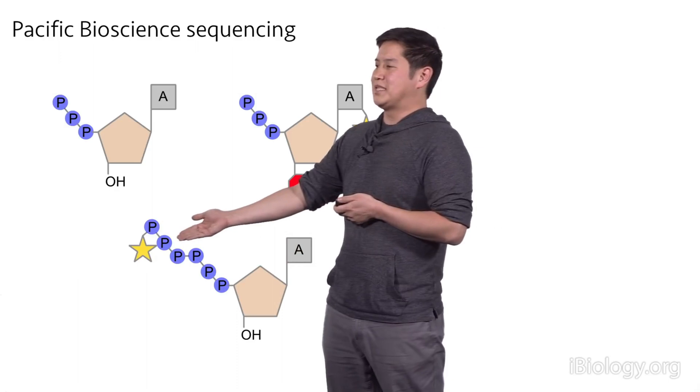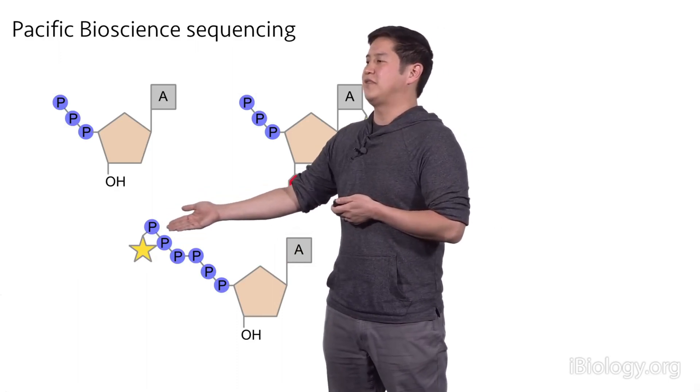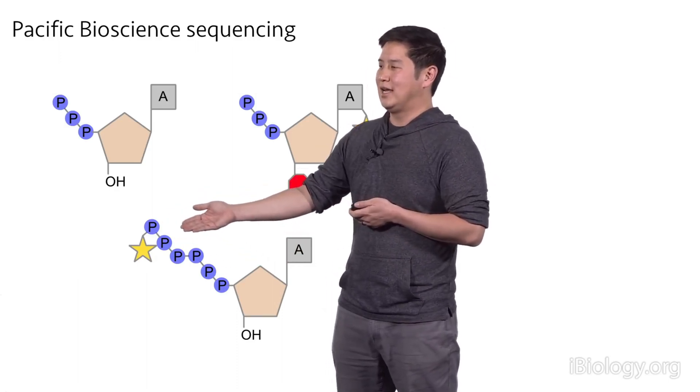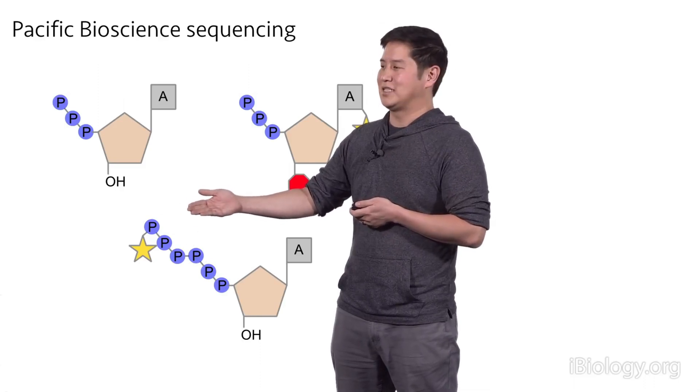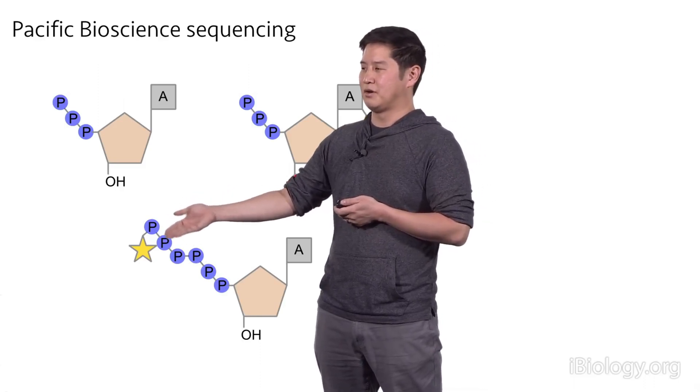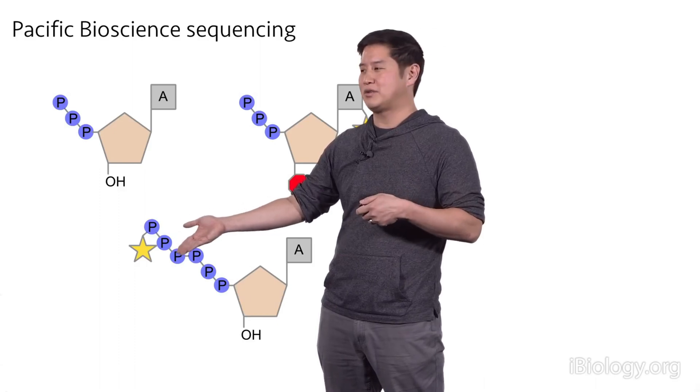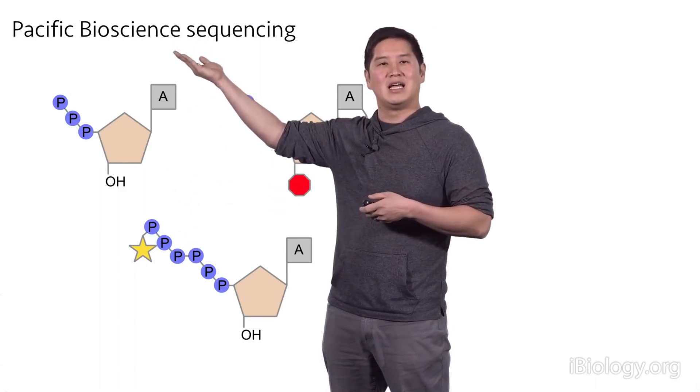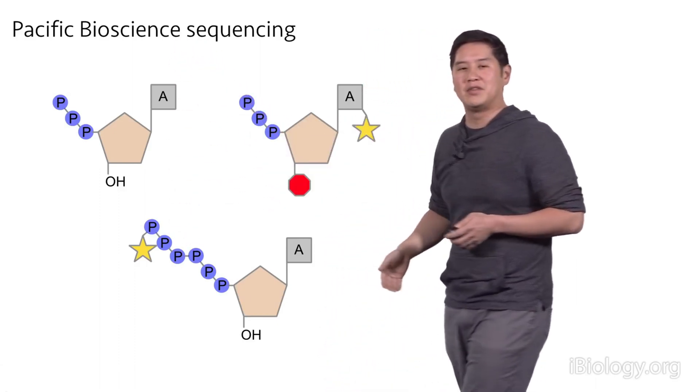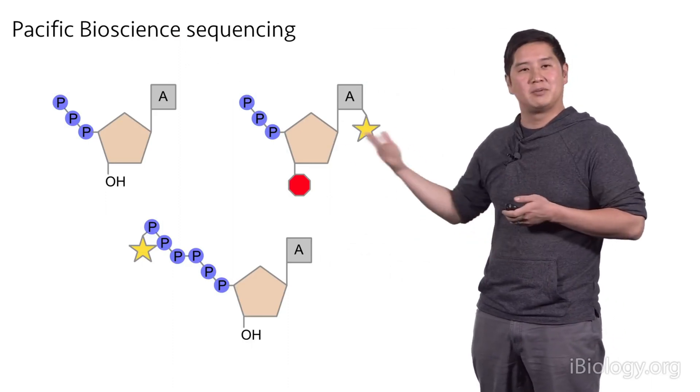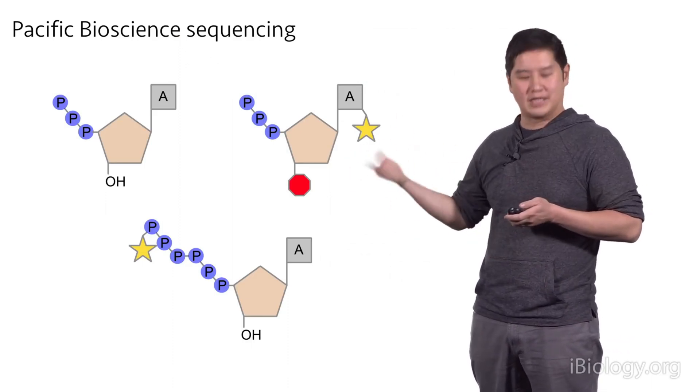And then the fluorescent group is actually attached to the phosphates. And these phosphates actually are removed once a base is incorporated. This means that this fluorescent group, once it gets incorporated into a DNA strand, will float away from the DNA strand. So this means that we don't have to do separate chemistry to enable the reaction to proceed. This happens in real time.